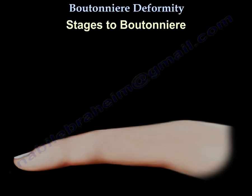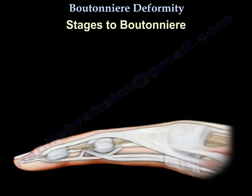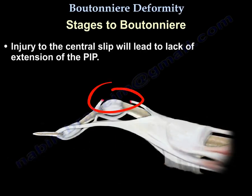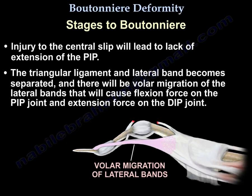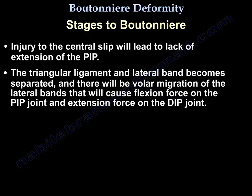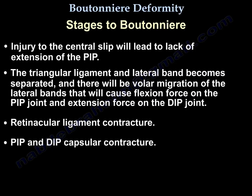What are the stages of Boutonniere deformity? An injury to the central slip leads to lack of extension of the PIP joint. The triangular ligament and lateral band get separated, causing volar migration of the lateral bands. This creates a flexion force on the PIP joint and an extension force on the DIP joint. There will then be retinacular ligament contracture and PIP and DIP capsular contracture.